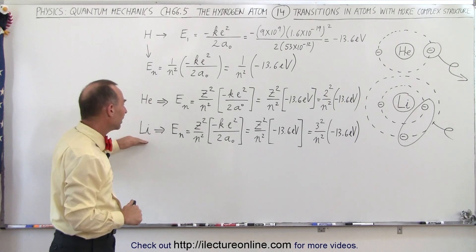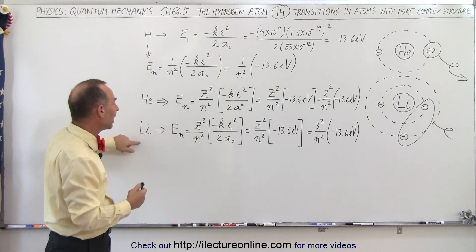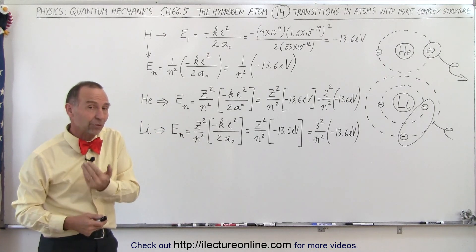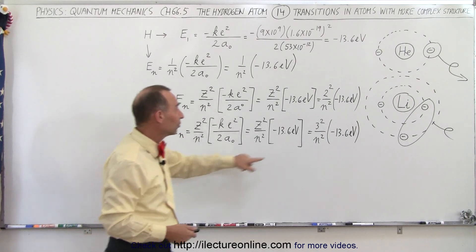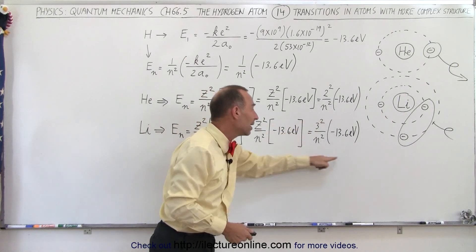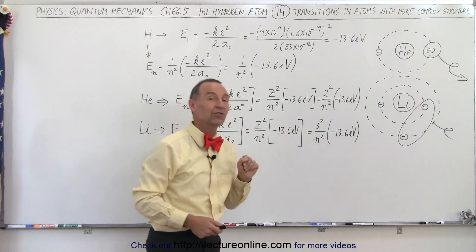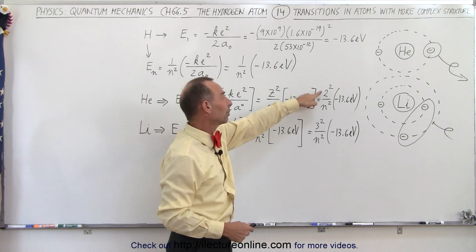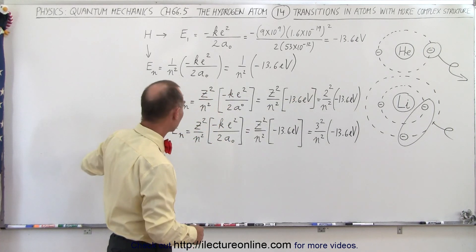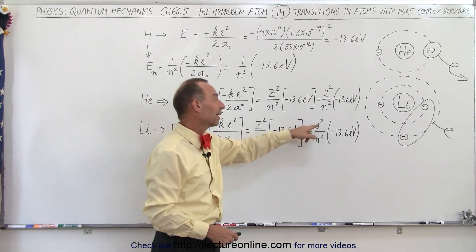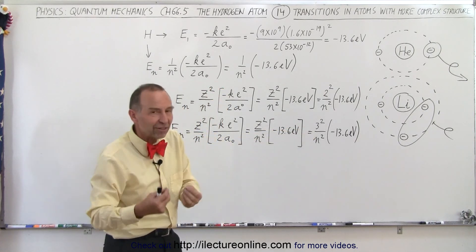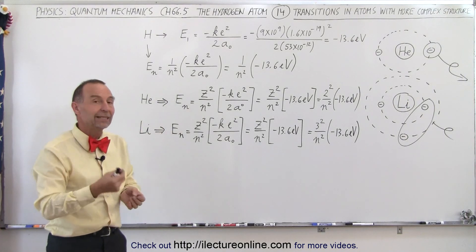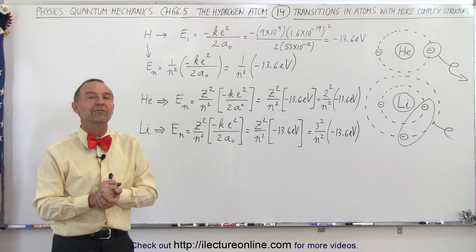When we go to lithium, the same applies — we have Z squared in the numerator. In this case Z equals 3, the atomic number of lithium, so that becomes 9 times the energy for the hydrogen atom. So for singly ionized helium we multiply by 4, and for doubly ionized lithium we multiply by 9. The very same equations that worked before will work for helium and lithium when there is only one electron left in the atom.